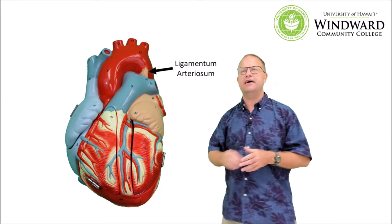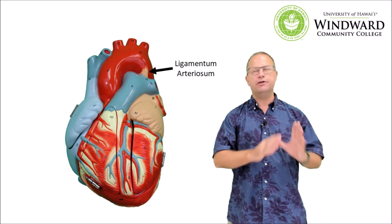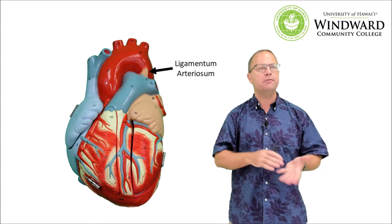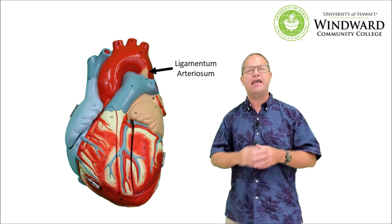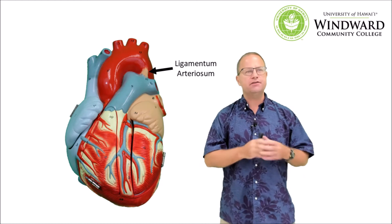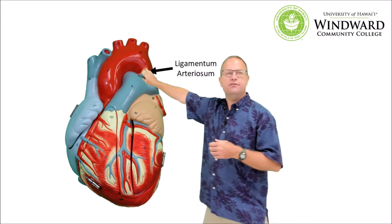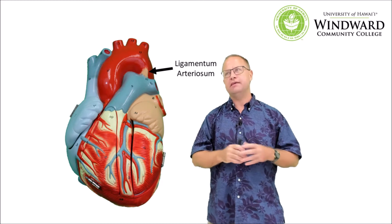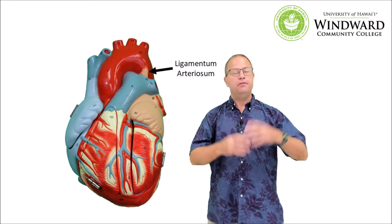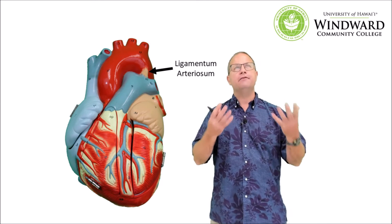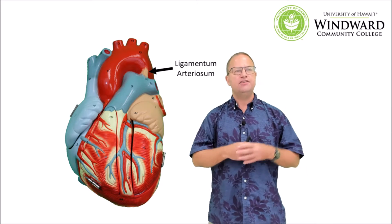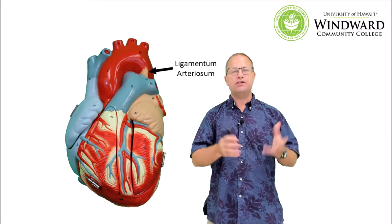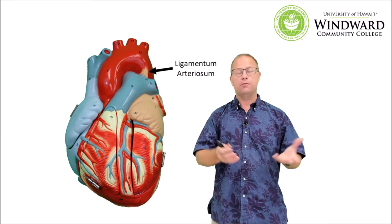There's another vessel — or remnant of a vessel — called the ligamentum arteriosum. This is a vestige of a fetal shunt called the ductus arteriosus, which allowed passage of blood from the pulmonary artery directly into the aorta, bypassing much of the pulmonary circuit. During fetal life there's nothing to breathe, so the embryo gets its oxygen from the mother's placenta. These shunts have to shut down close to or after birth, otherwise there are big problems.